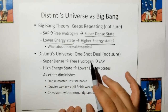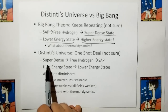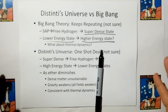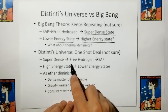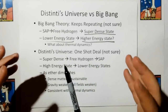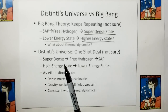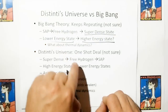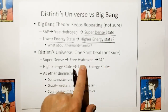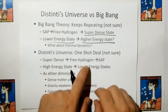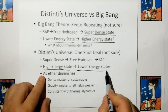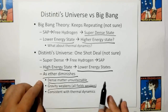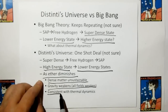In Distinti's universe, I think it's a one-shot deal. The universe started out as super-dense matter, and as ether is depleted it starts bubbling like popcorn and exploding in certain places, distributing matter all over. Eventually, in the bellies of stars, heavier atoms are decomposed into lighter atoms. The universe goes from a super-dense state and will eventually end up as free hydrogen; when the ether gets too thin to support free hydrogen, it breaks down into subatomic particles. We're going from a high energy state to a low energy state — as ether diminishes, dense matter becomes unstable, gravity weakens, all fields weaken. This is consistent with thermodynamics.